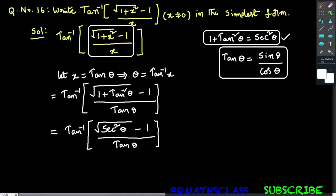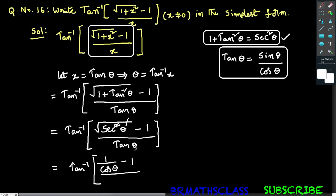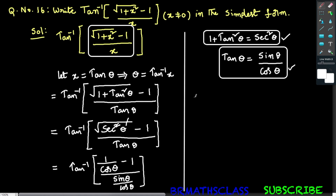Observe that square root of secant squared theta can be written as secant theta squared, then the square root and the power of 2 cancel. That equals tan inverse of secant theta minus 1 in the numerator. Secant theta can be written as 1 divided by cos theta, so in place of secant theta write 1 divided by cos theta, minus 1, divided by tan theta. The formula for tan theta is sine theta divided by cos theta.